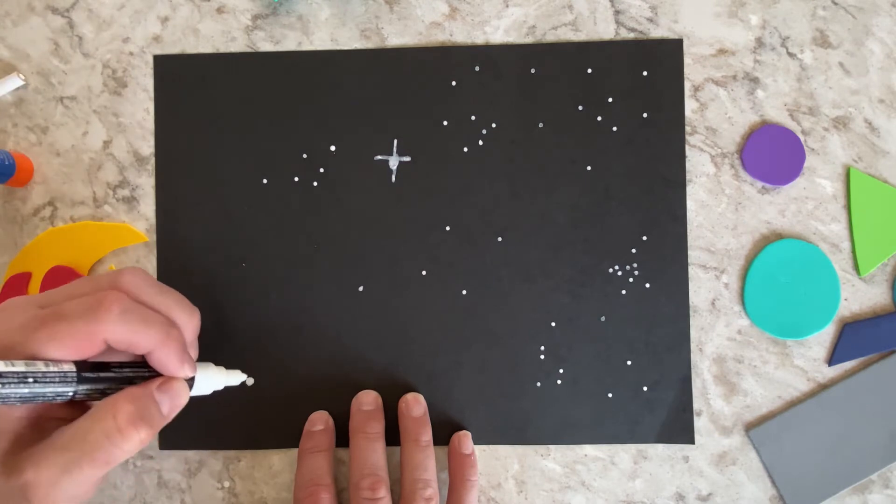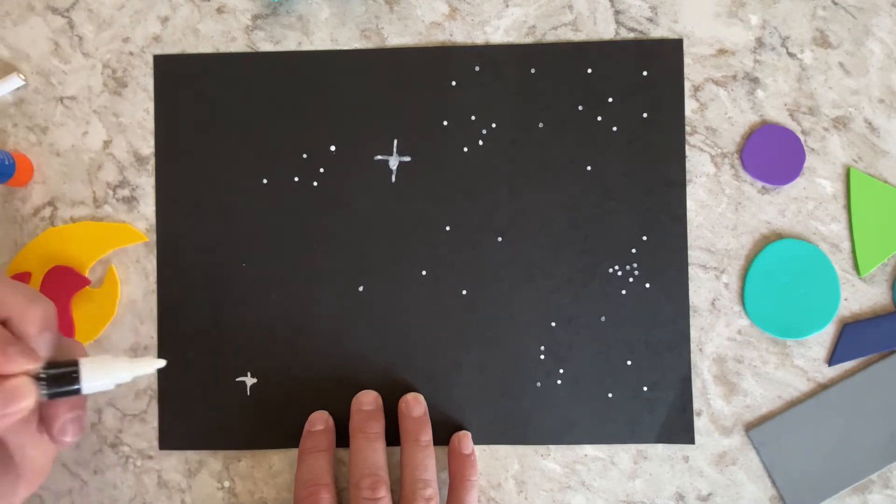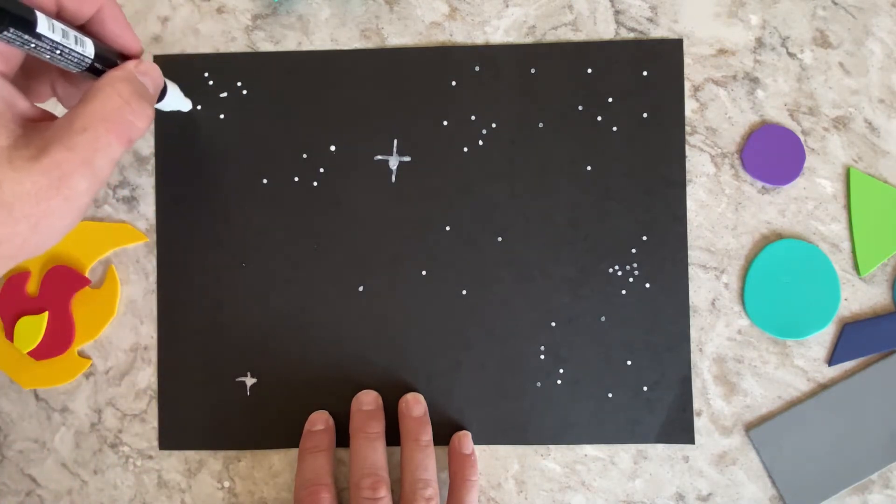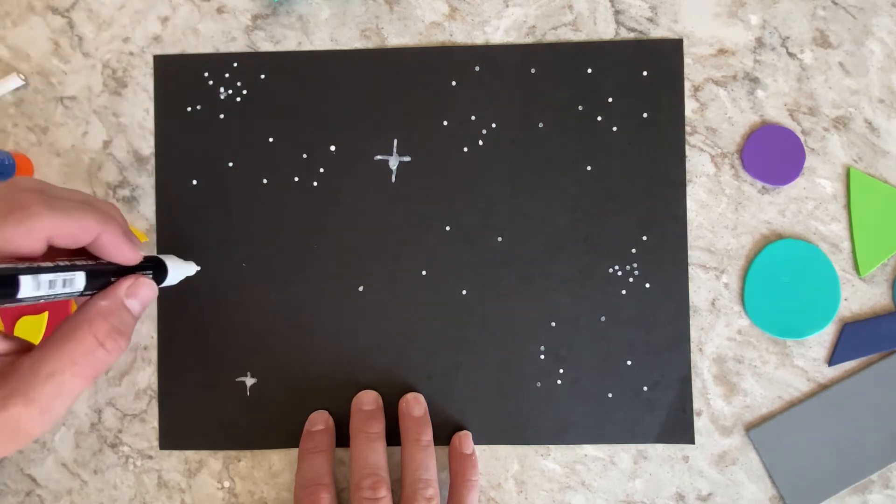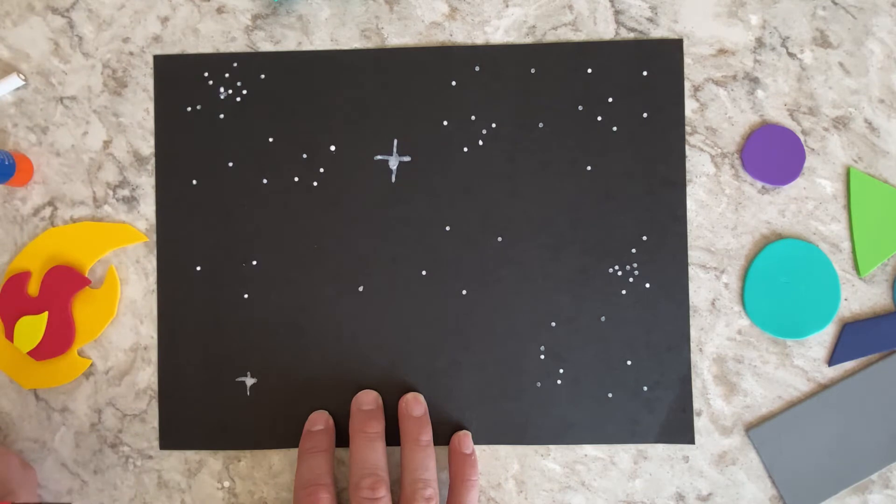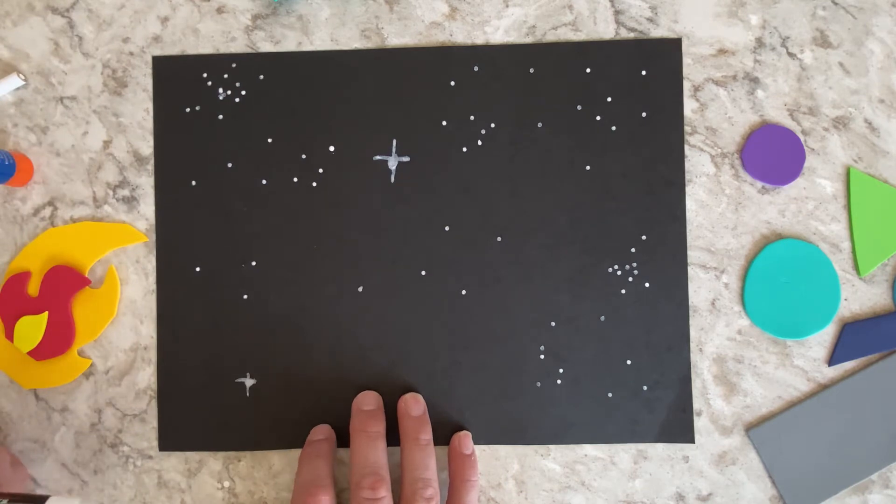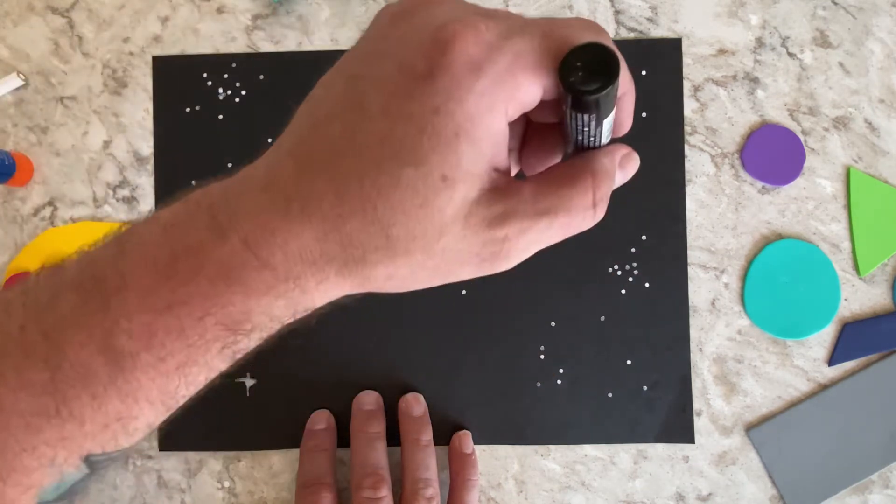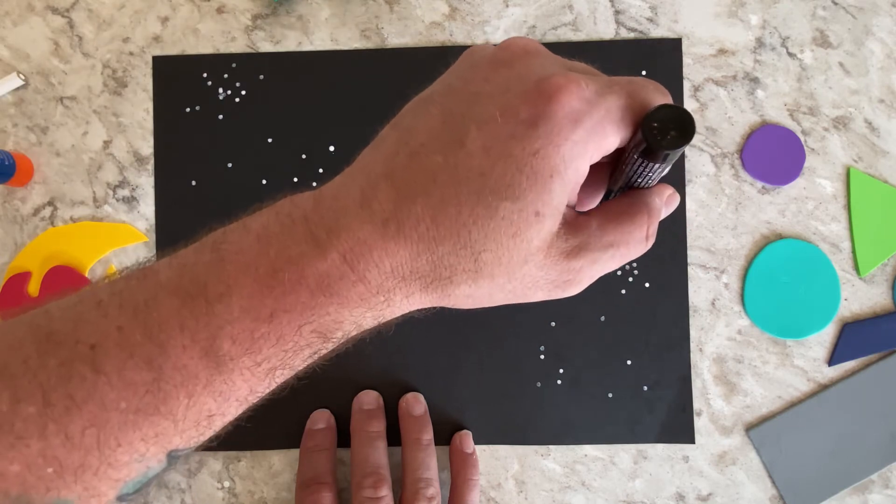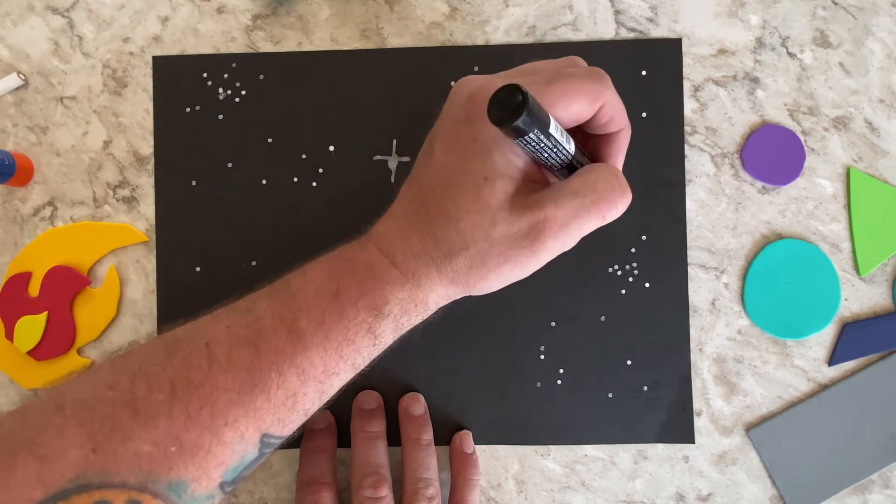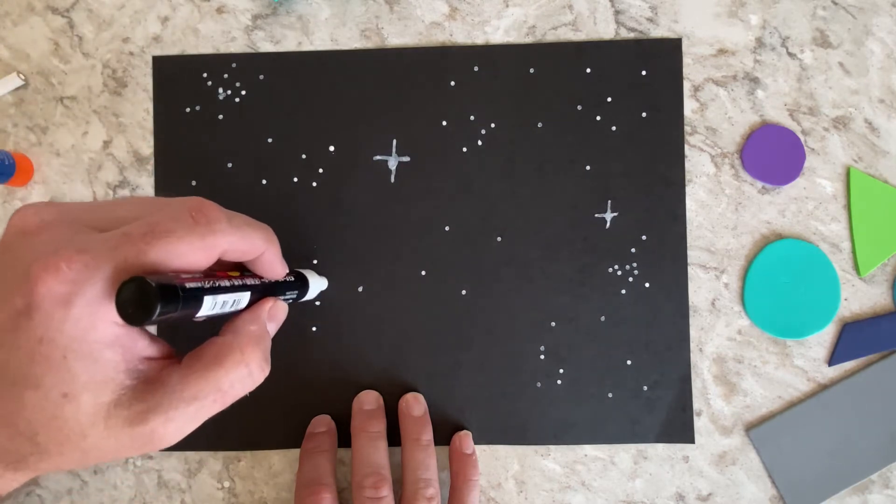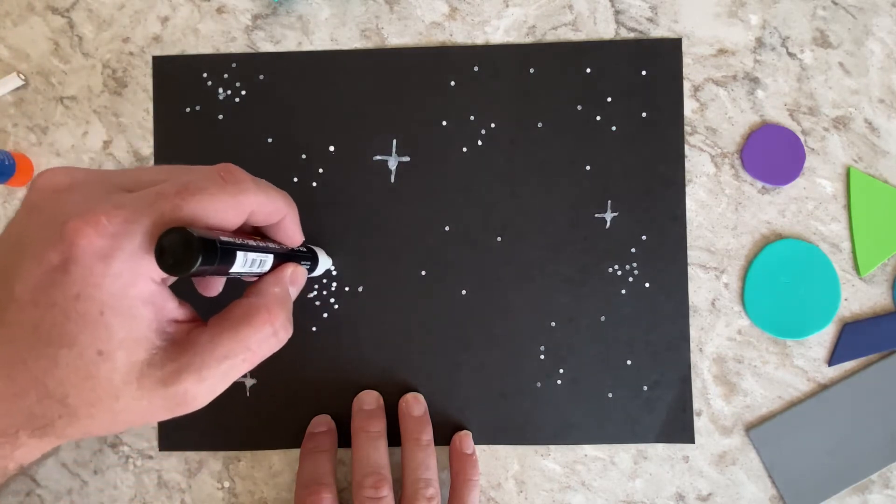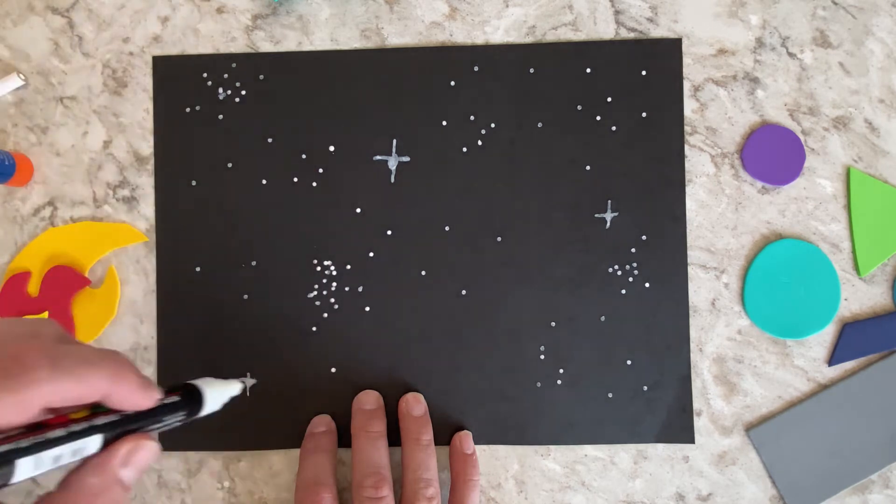Maybe here's another big one down in this corner and we'll put a plus sign in that. Now, things in art tend to look more pleasing to the eye when you do them in odd numbers. So, I've got two shiny stars, so maybe I'm going to put a third shiny star over here to kind of balance it out. I'm going to put a whole bunch of them clumped together right in here and then over here in the corner.